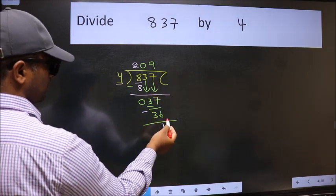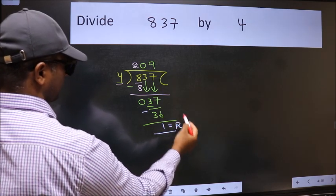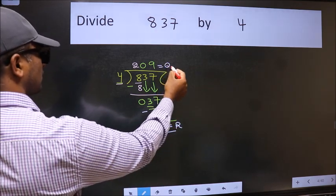No more numbers to bring it down. So we stop here. This is our remainder and this is our quotient.